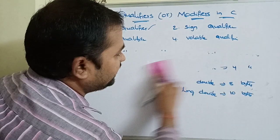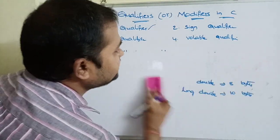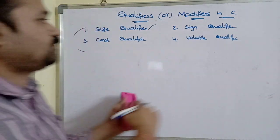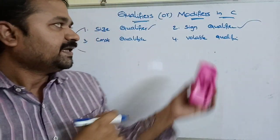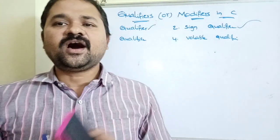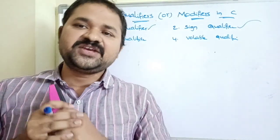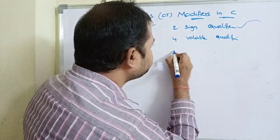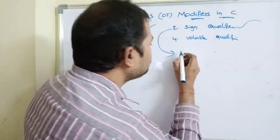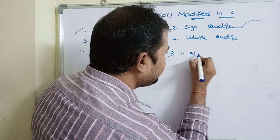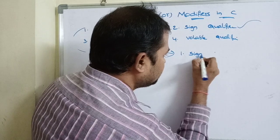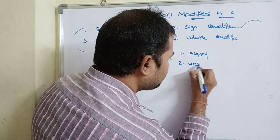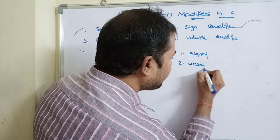Now let's see the second type of qualifier: the sign qualifier. There are two types of sign qualifiers available. The first one is the signed qualifier and the second one is the unsigned qualifier.